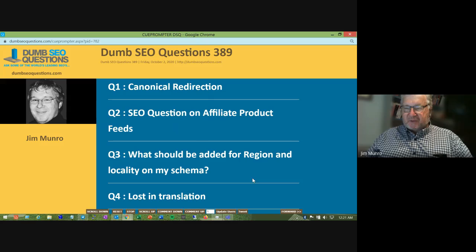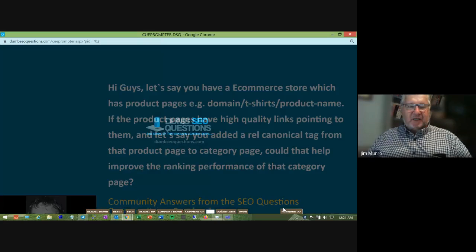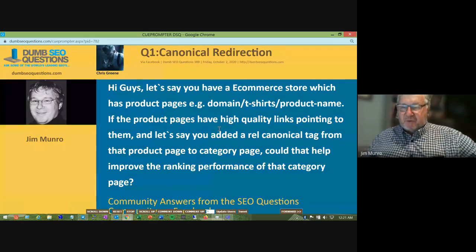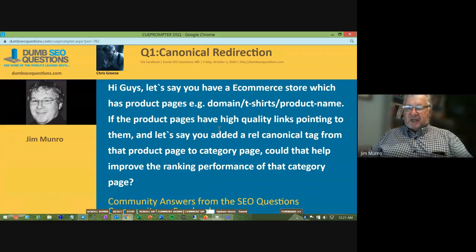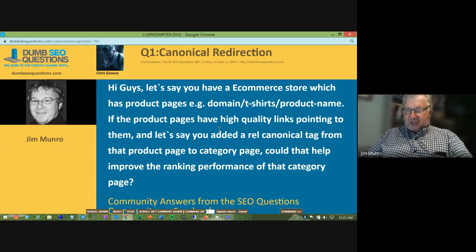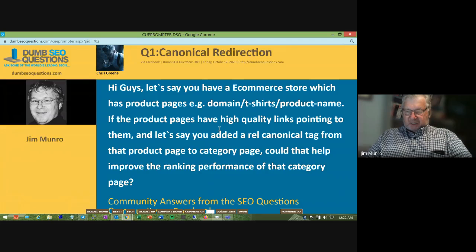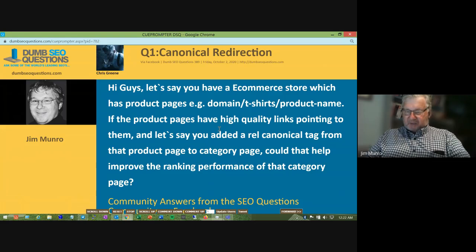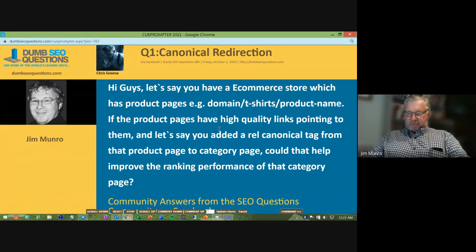Our first question is from Chris Green. It's called Canonical Redirection. Chris said: let's say you have an e-commerce store which has product pages, for example, domain slash T-shirt slash product name. Now, if the product pages have high-quality links pointing to them, and you add a rel canonical tag from that product page to the category page, could that help to improve the ranking performance of that category page?